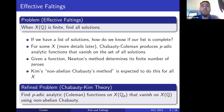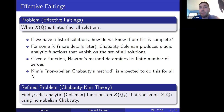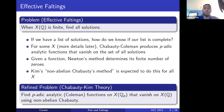The refined problem is finding specific p-adic analytic functions — specifically a kind called Coleman functions — on the set of p-adic points of the algebraic curve that vanish on the set of rational points, which allows you to prove in many cases that your list of rational points is complete.